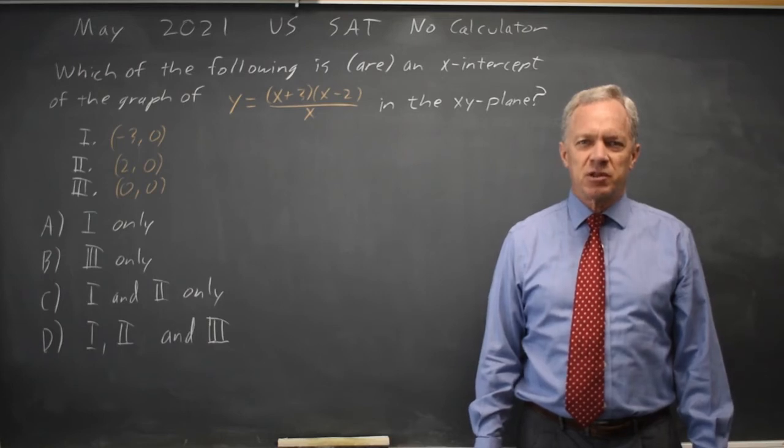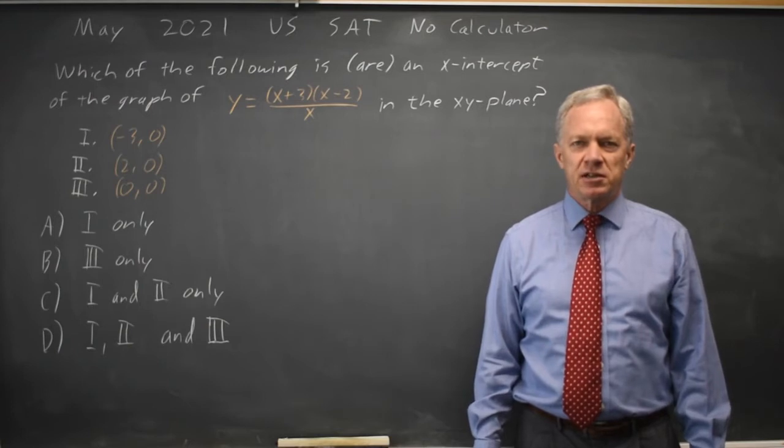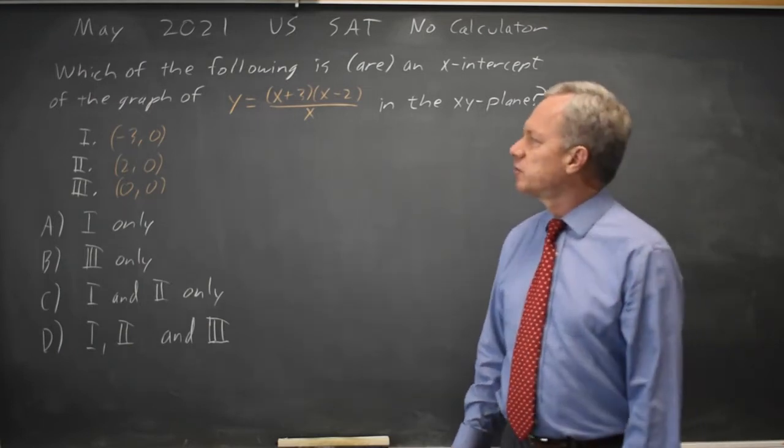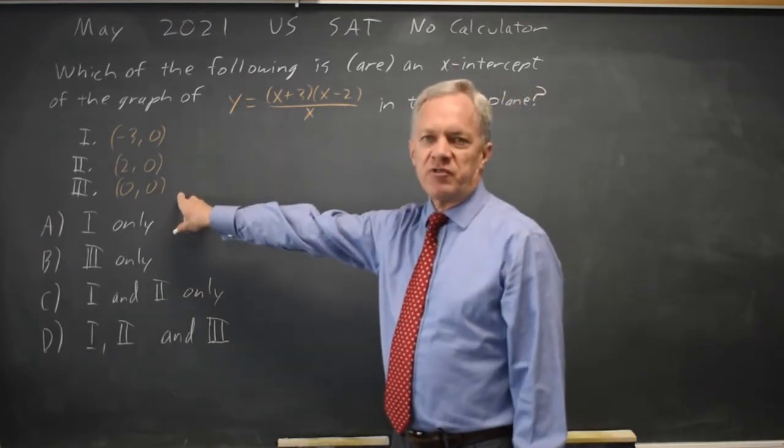I'm Dr. Roger, and this question is from the May 2021 U.S. SAT non-calculator. College Board is asking for the x-intercepts of a rational function. The x-intercepts occur where the y-value is 0.